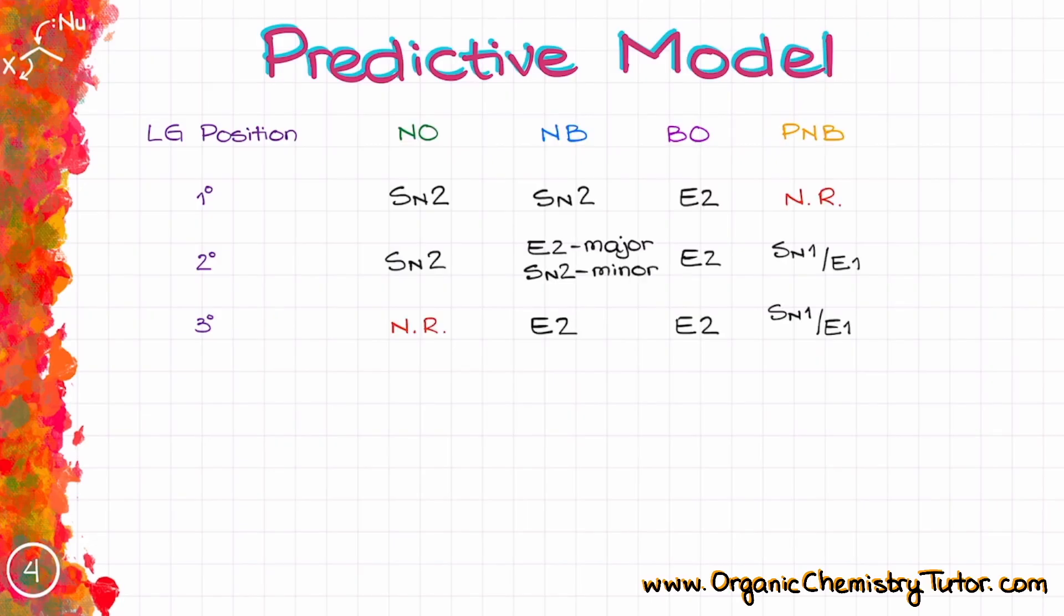So if we add all the reagent types into this predictive model, we end up with a three by four table with all possible outcomes that's going to look like this. And as you can see, it makes a nice diagonal diagram which is kind of easy to remember. So as you can see, most of the decisions here are going to be quite straightforward until we hit the SN1 or E1 reactions.